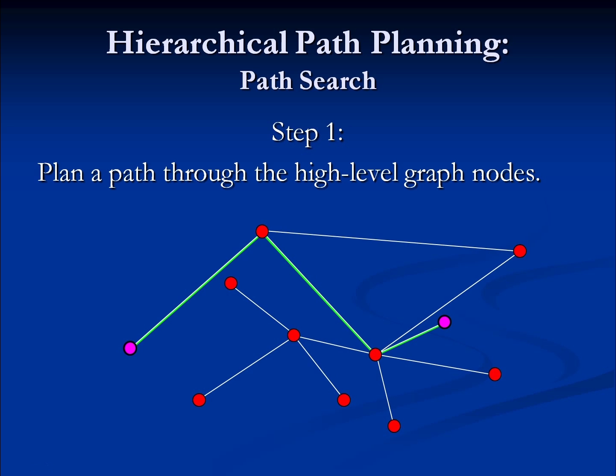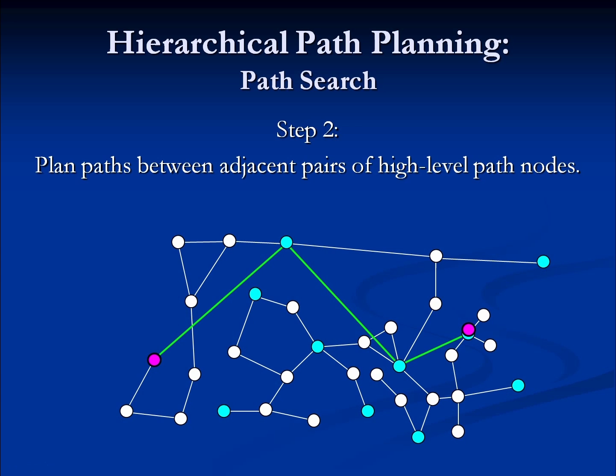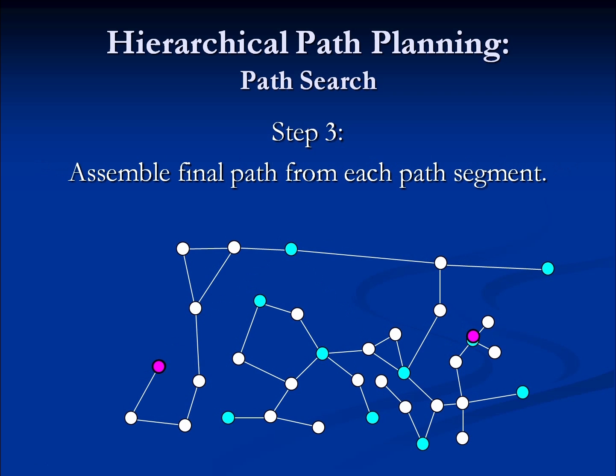Step two — we're going to use all the vertices found in the higher-level path. Those become our start and end points for multiple searches in the lower-level graph. In this example, we had four locations on our high-level path. Each of those connected vertices represents a search we need to do on the lower-level graph. We combine all of those search results to get one complete path that gets us between our original start and end goals.